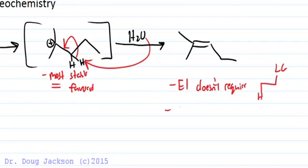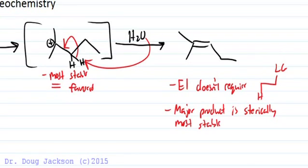You're always going to pick the major product as the sterically most stable. And that's the case for E2 if there are multiple beta-hydrogens.